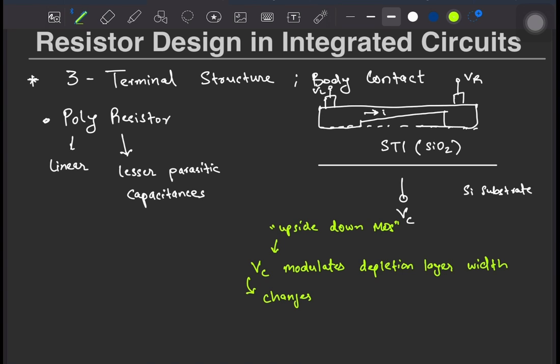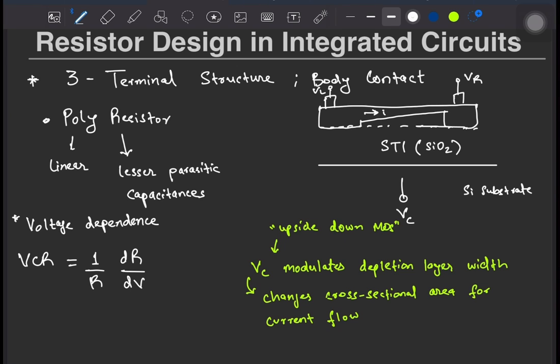Thus, you have a voltage dependence on the resistance value which is captured by the parameter VcR, which is equal to 1 over R times dR over dV, where V is the difference of Vc and the average potential across the resistor.